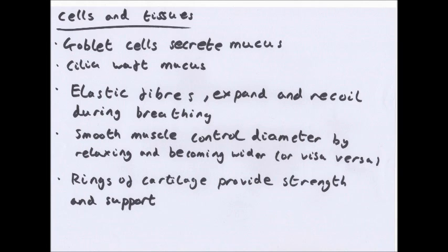Elastic fibres are particularly important in the alveoli but important throughout. They are elastic, so they can expand, increasing the volume, and then recoil — suddenly retract — pushing air out. It's very important to use the word 'recoil'.